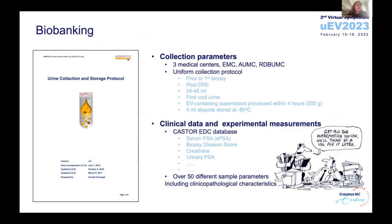Here is the biobanking — I'm showing you the first page of our urinary collection and storage protocol. If you look at the date of preparation, you will see we started this document in 2016, and it took practically one year before we ended up with the complete protocol. Regarding biobanking, there are two important factors: the collection parameters — particularly if you're going to do a multi-center study, you need a uniform collection protocol — and the clinical data and experimental measurements: what are you going to collect, how are you going to collect data, and how are we going to store and maintain it in a privacy-compliant manner?